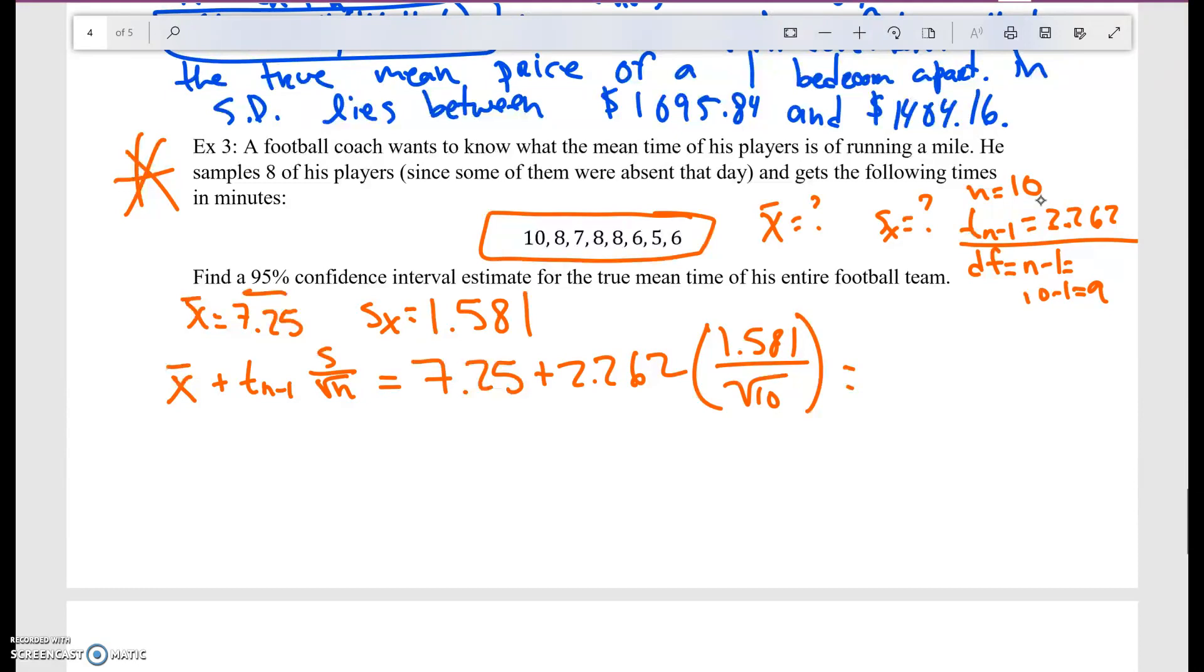So let's put this in our calculator. So I'm going to have 7.25 plus 2.262 times 1.581 divided by square root of 10. And what we're going to get is 8.38.